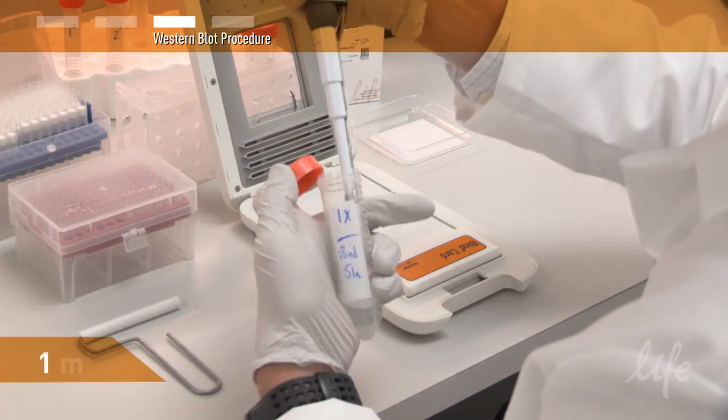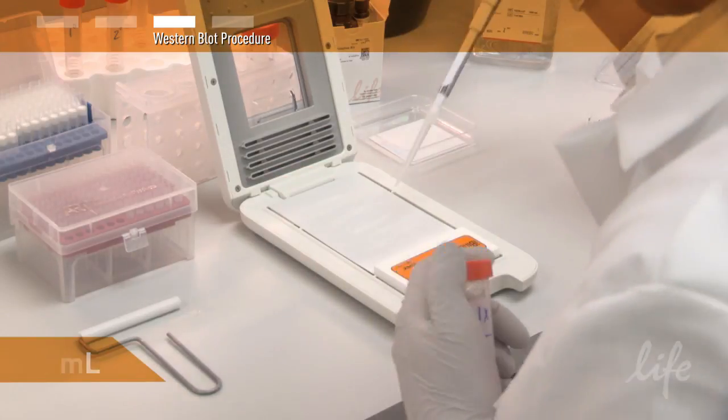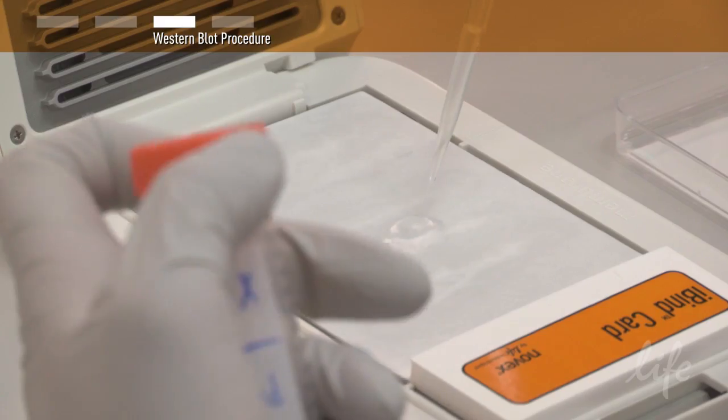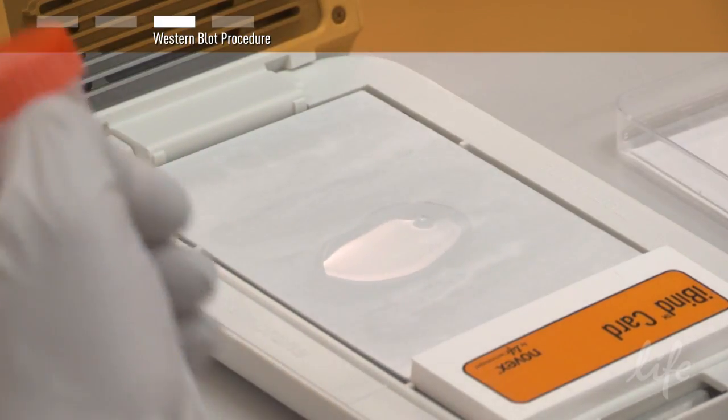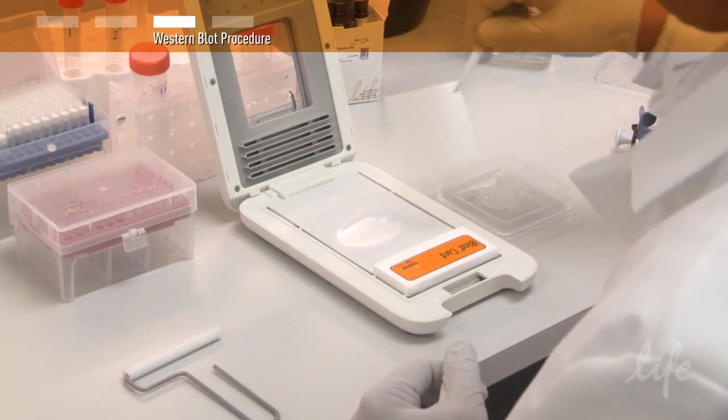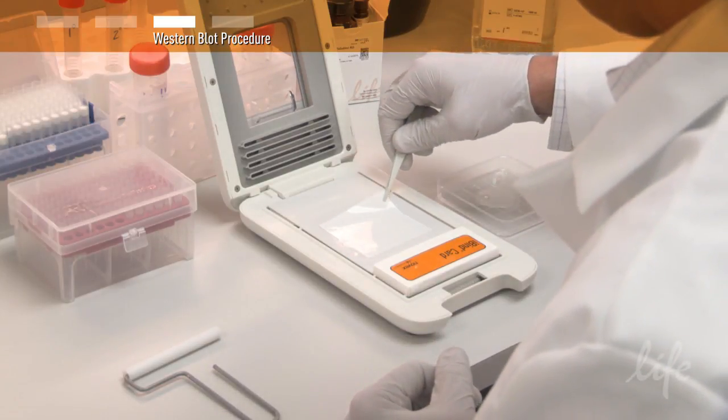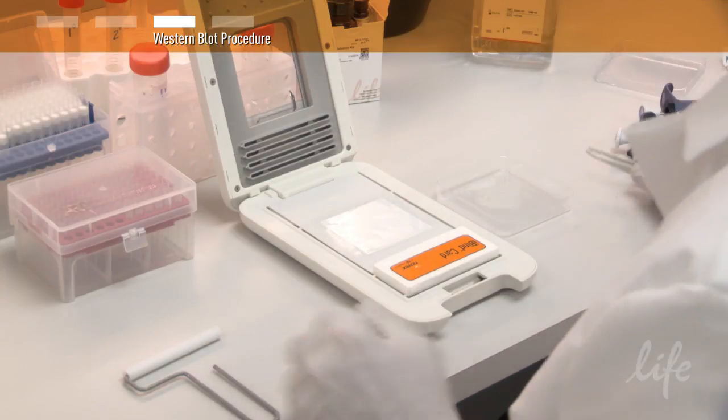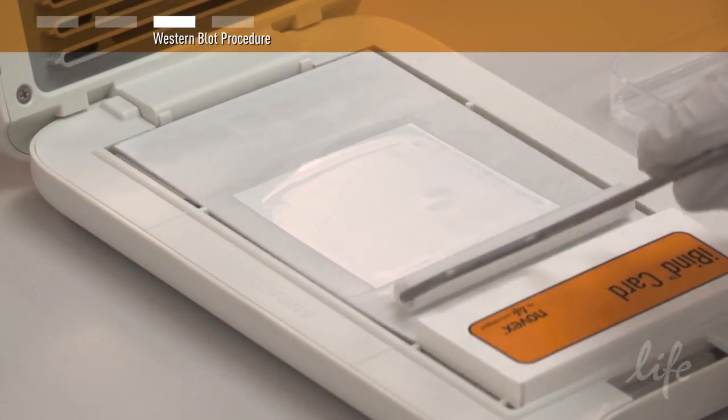Add 1 milliliter of the 1X iBind solution in the middle of the membrane region of the card so that it pools in the center. Place the membrane directly on top of the pooled solution with the protein side down and the low molecular weight proteins closest to the stack.